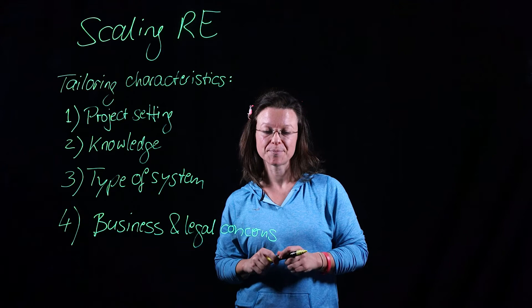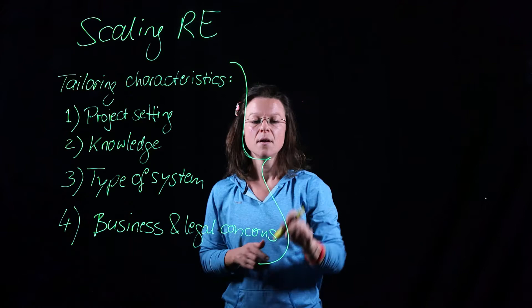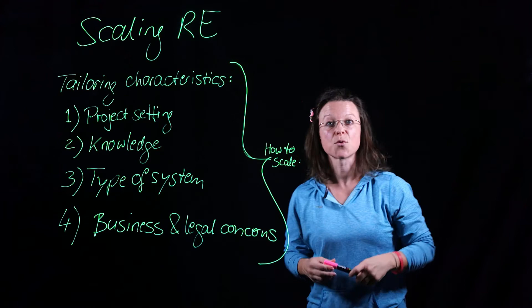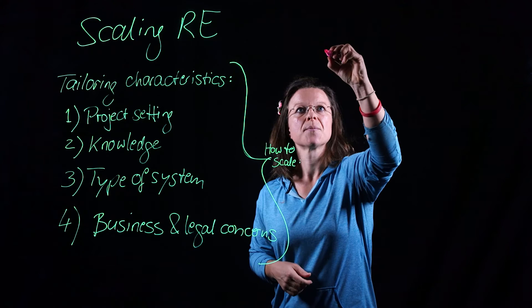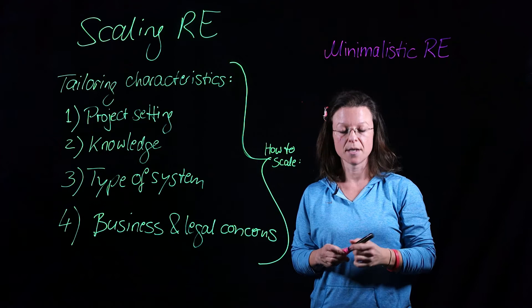Now, once we know those factors, we can look into how to scale the requirements engineering approach. We'll do that in three levels. The first level — let's call it minimalistic requirements engineering. Minimalistic RE would be something that I do in an agile context in a small-scale project.